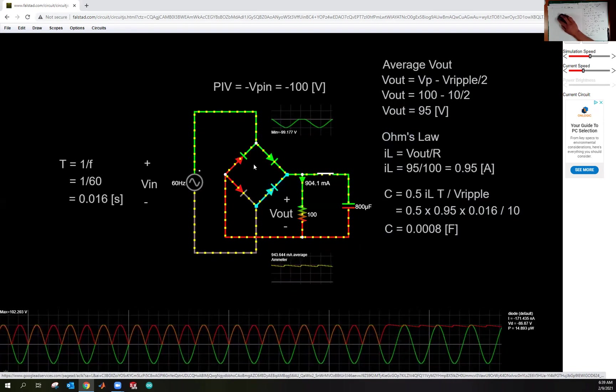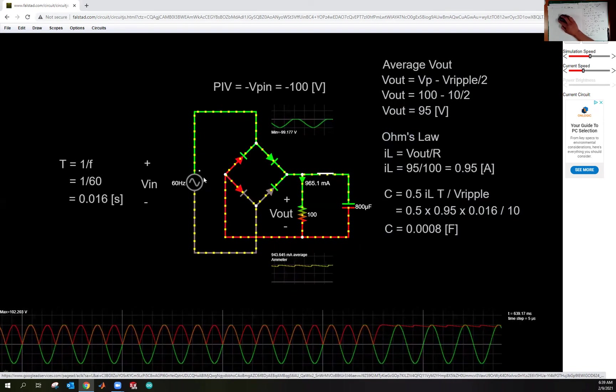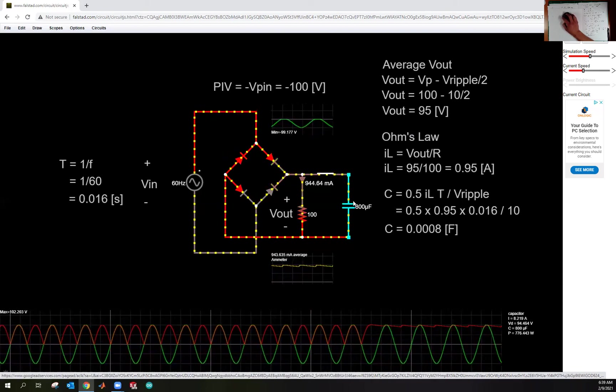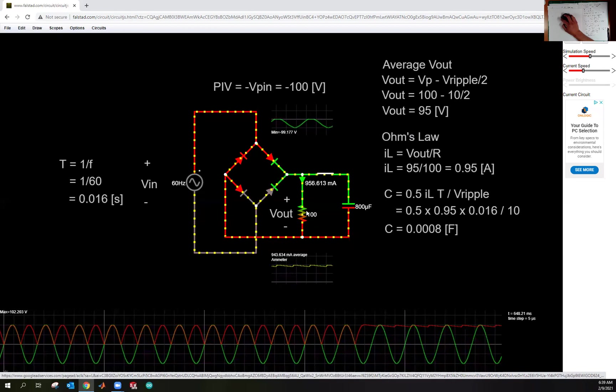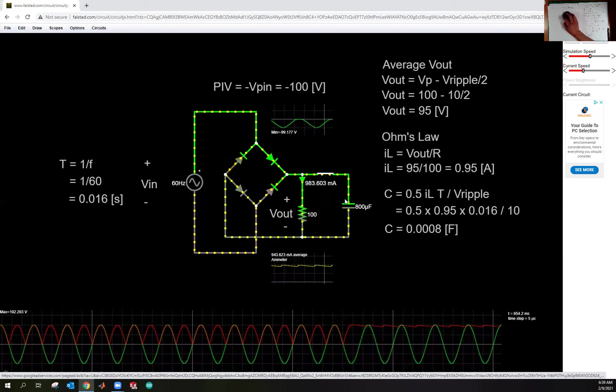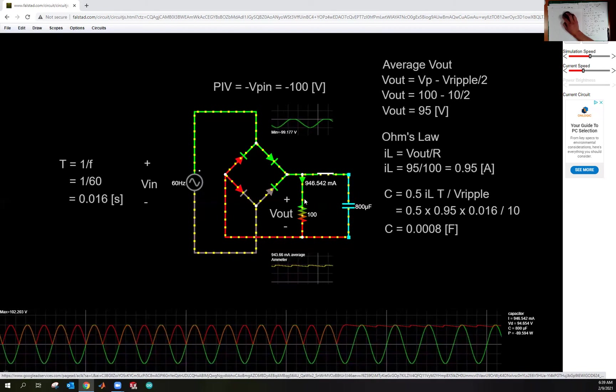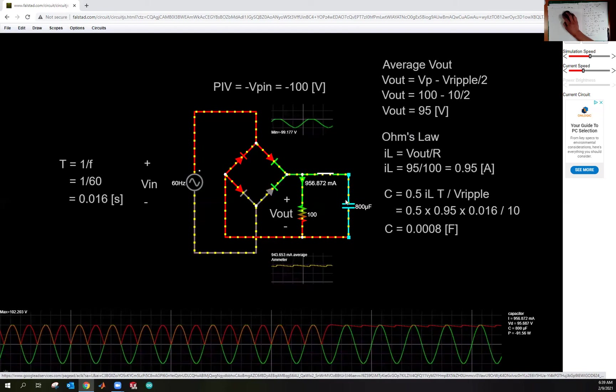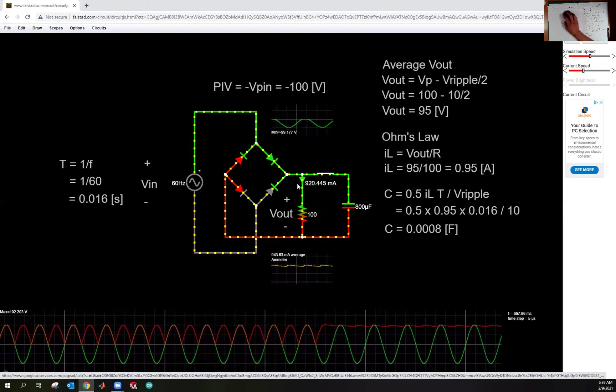And so you notice whenever you're getting negative voltage here, or sorry, when this is not getting current, the capacitor is delivering that extra current during those dead interval times. And so you can see this kind of charge-up behavior going, where it's charging both the capacitor and providing current to the resistor from the input. And then when this is not providing current, then the capacitor is doing the work.